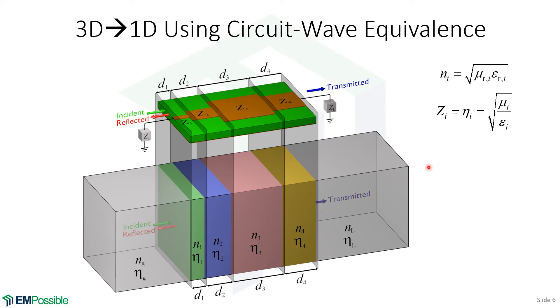we can convert that into a one-dimensional simulation of infinite slabs where each slab has an impedance and a refractive index, which of course we can then turn into our mu and epsilon in each layer. And we can simulate circuits like this very accurately with a very fast code. And we've done this in our research, and it works extremely well.